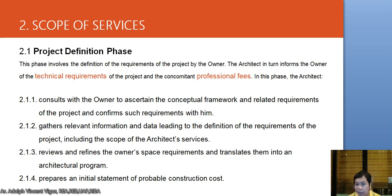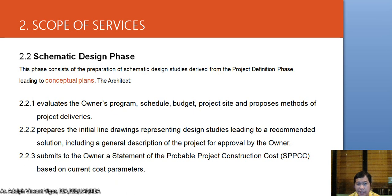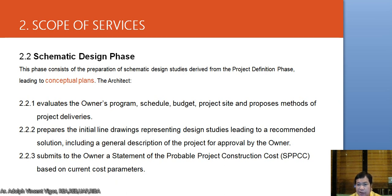As you experience more project types in this field, you'll eventually have a grasp of how much things cost to construct. The Schematic Design Phase consists of preparation of schematics derived from the Project Definition Phase, leading to concept plans. The architect evaluates the owner's program, schedule, budget, and project site, then prepares initial line drawings representing design studies leading to a recommended solution, and submits a Statement of Probable Project Construction Cost (SPPCC) based on current cost parameters.